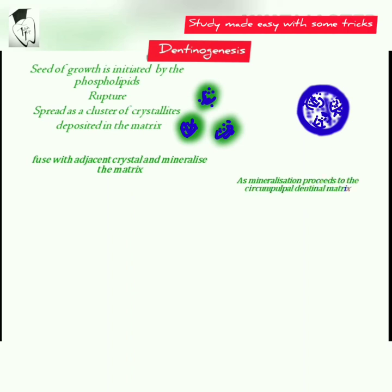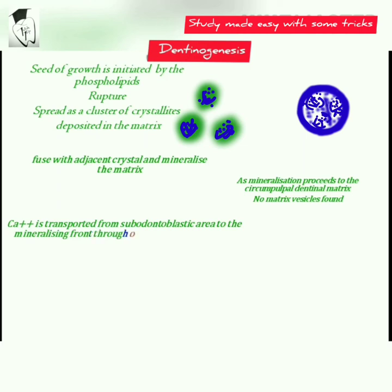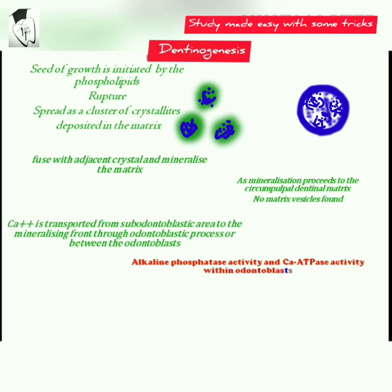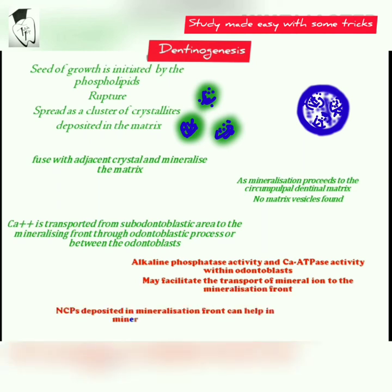Calcium is transported from the subodontoblastic area to the mineralization front through the odontoblastic process or between the odontoblasts. Alkaline phosphatase activity and calcium ATPase activity at the distal end of the cell have been reported within the odontoblast, which may facilitate transport of mineral ions to the mineralization front. Non-collagenous proteins also help in the mineralization of dentine.